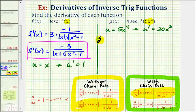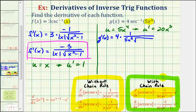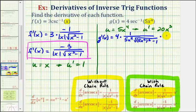So g prime of x is going to be equal to four times the derivative of inverse secant u, which is one divided by the absolute value of u, which would be the absolute value of five x to the fourth. But since this exponent is even, this will always be positive, so we can drop the absolute value. Then we'd have the square root of u squared minus one, or five x to the fourth squared minus one. This would be the derivative of the outer function, times u prime, or the derivative of the inner function, which is twenty x to the third.